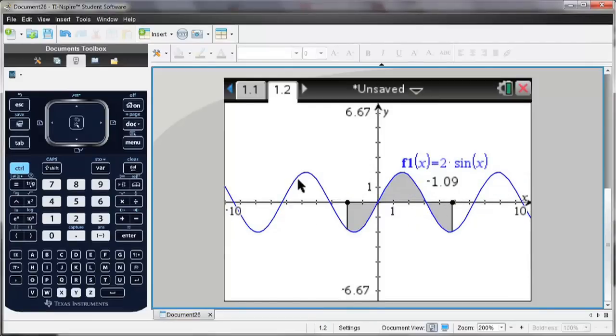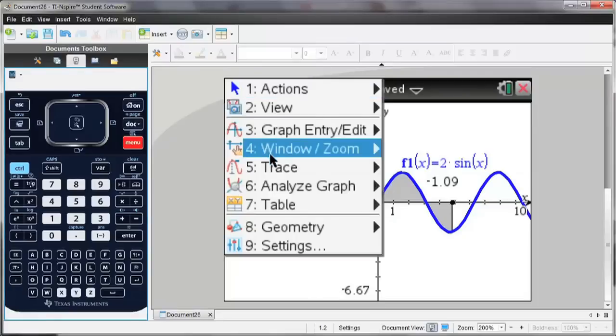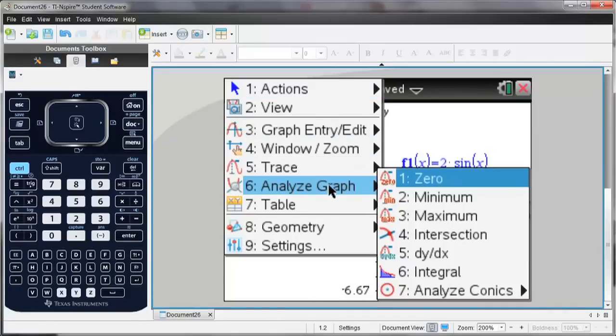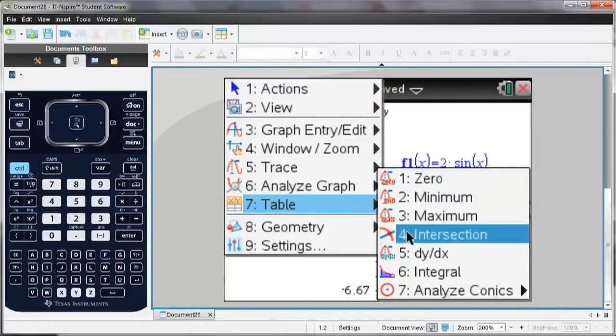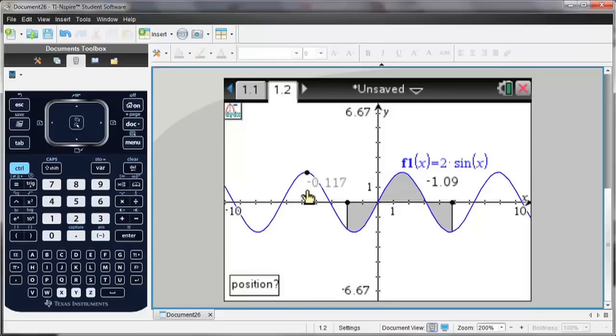I could also find the derivative at certain points on this graph. Select menu, analyze graph, dydx, and then select a point anywhere along the graph. And the number you see here is the value of dydx at this point.